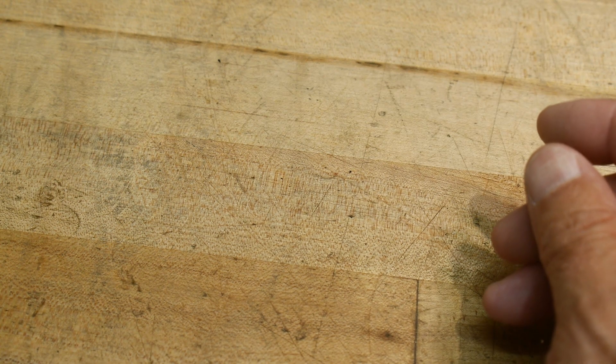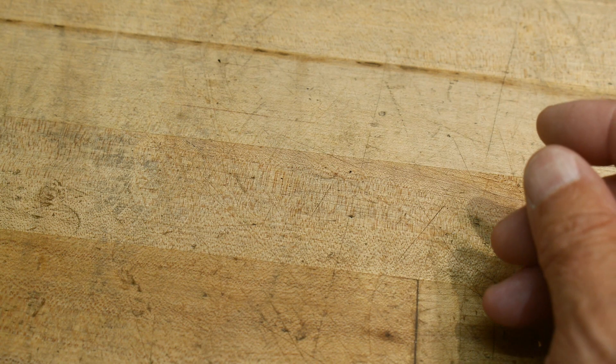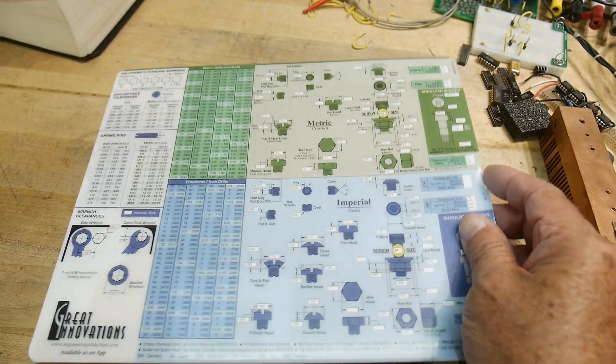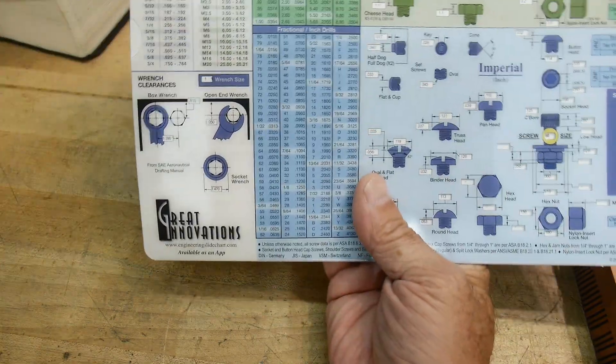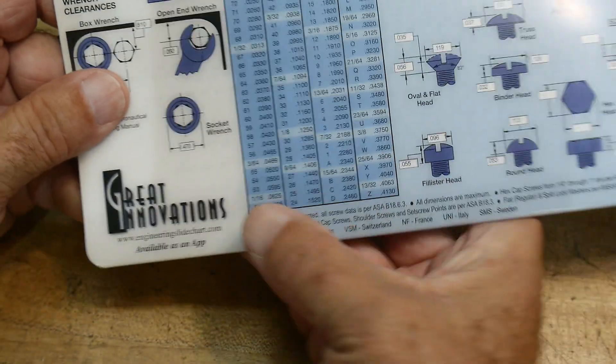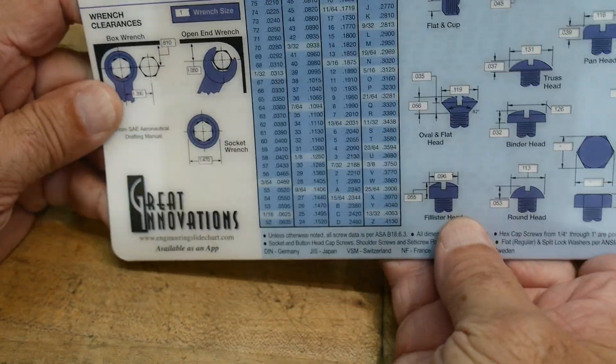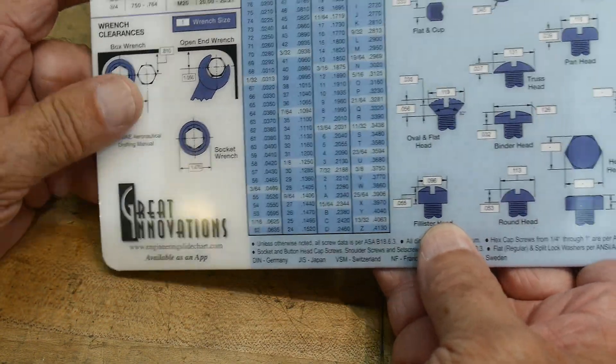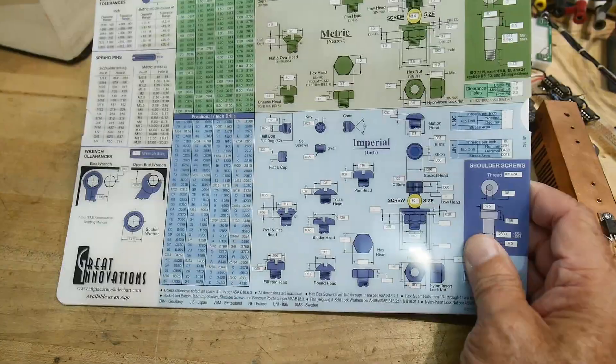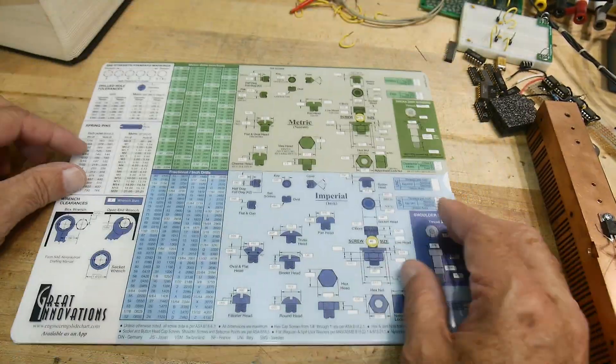A company reached out and said that they make these, and would I want one? I said, yeah, sure. And this is made by a company called Engineering Slidechart.com. Now it's a nice lady. She says it's just her and her husband. They're a two-person company, and they make these things.